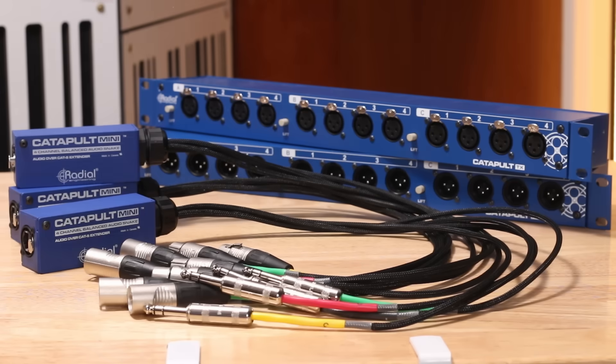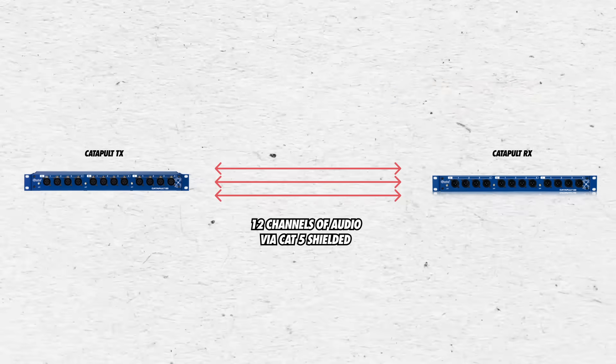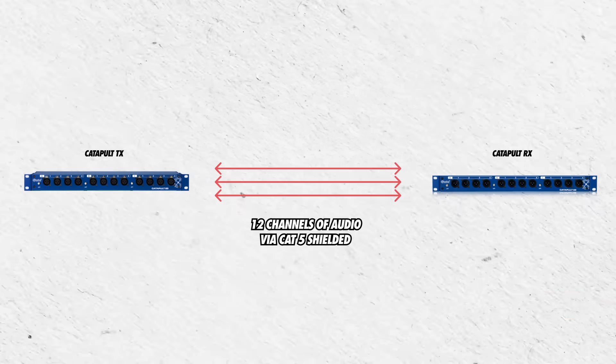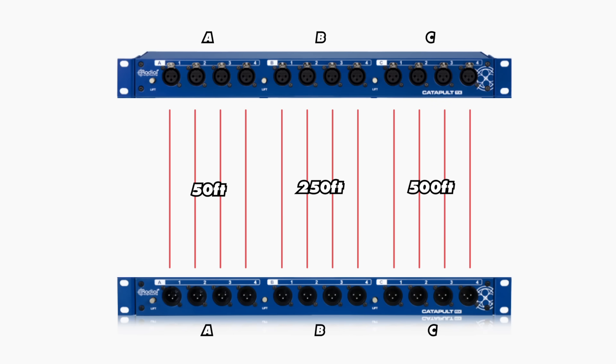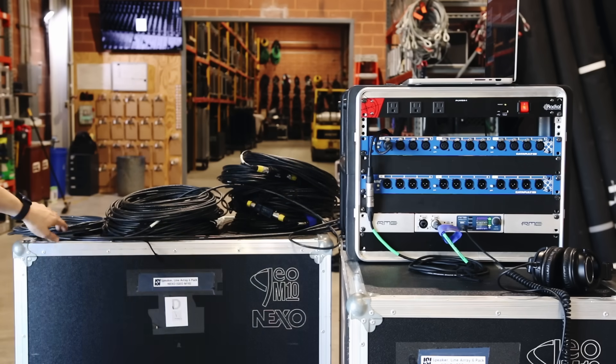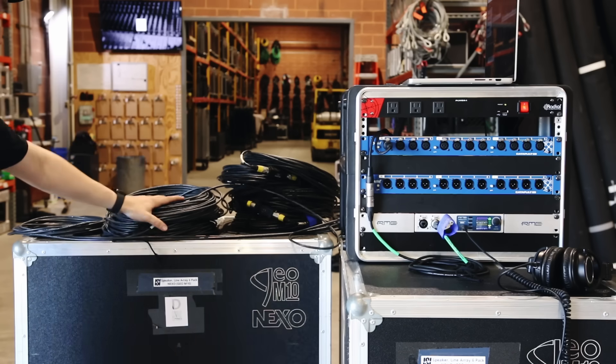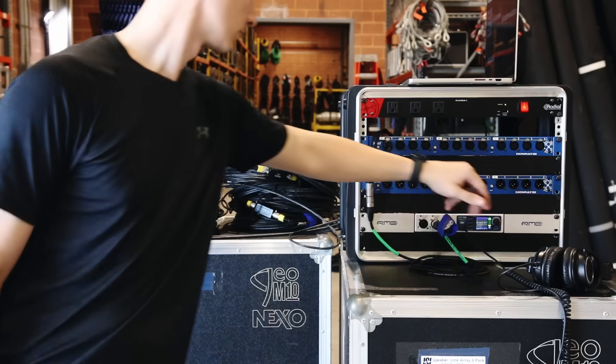So how far can you run an analog audio signal over a shielded, balanced, twisted pair like you'd find in an XLR, TRS, or Cat5 shielded cable? Let's find out. Under normal circumstances, we could put the Radial Catapult Rack TX in one location and send 12 channels of audio to the Catapult Rack RX in another location using three Cat5 shielded cables — one for each bank of four channels. In this test setup, I've connected bank A of each device with a 50-foot Cat6 shielded cable, bank B with a 250-foot Cat6 shielded cable, and bank C with 500 feet of Cat6 shielded cable. This should allow us to progressively listen to the impacts of cable length.